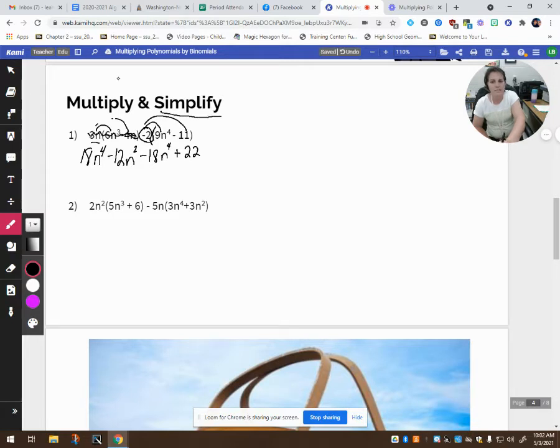Now we have to simplify. We look through here, see if there's any like terms, and make sure that we put our answer in standard form. So I have 18 n to the fourth minus 18 n to the fourth. But those cancel each other out. And I'm just left with negative 12n squared plus 22. So I am left with a binomial. There's two terms of the second degree.